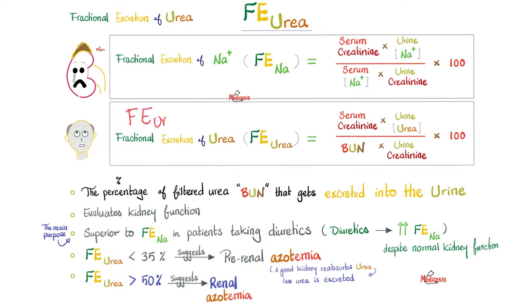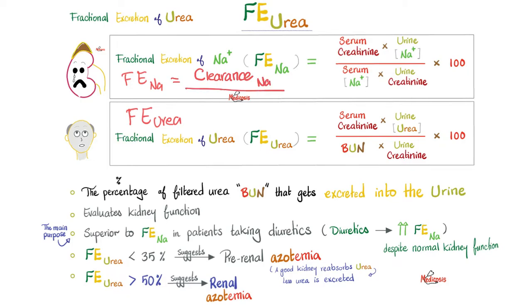The fractional excretion of urea has two equations, just like the fractional excretion of sodium. For the fractional excretion of sodium, we start with the sodium excreted — urine sodium on top, serum sodium on the bottom, multiplied by something reciprocal: serum creatinine on top and urine creatinine on the bottom. Multiply by 100, and you get your FENA. Or there is a simpler way: the fractional excretion of sodium is the clearance of sodium over the kidney's GFR. For the fractional excretion of urea, just put urea instead of sodium — it's the clearance of urea over the GFR. Out of all the urea given to the kidney, how much did it excrete as a fraction of what was filtered?